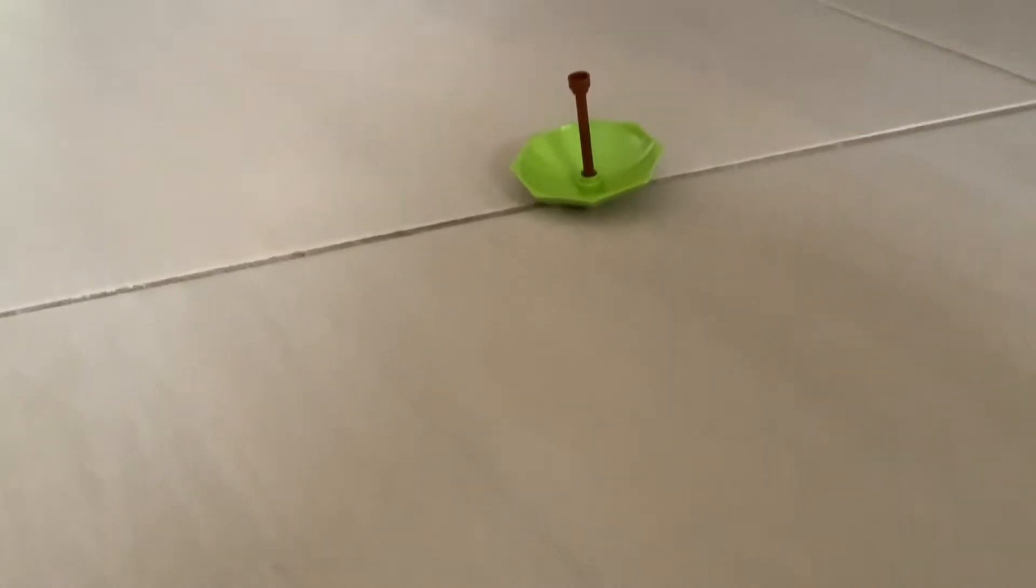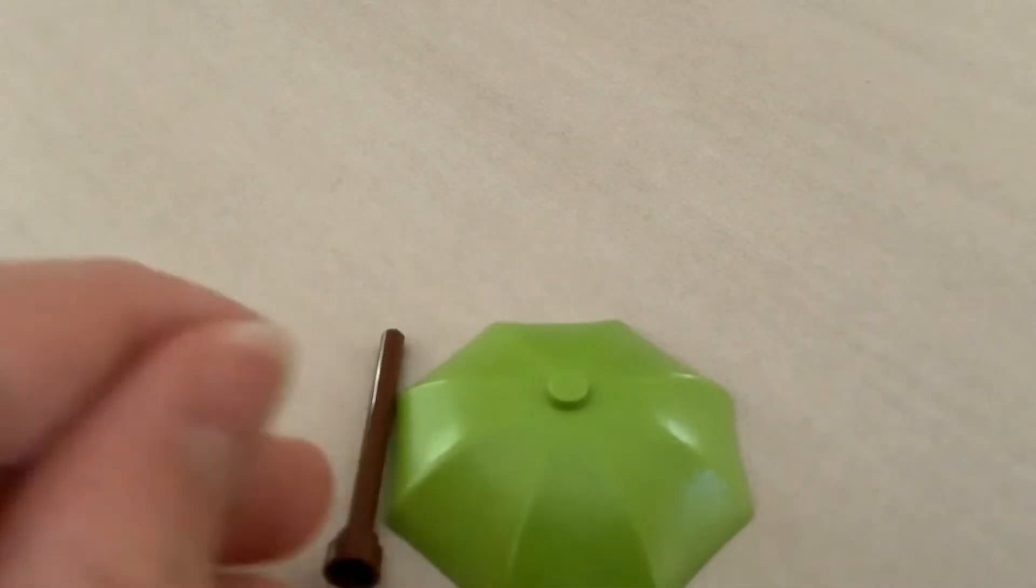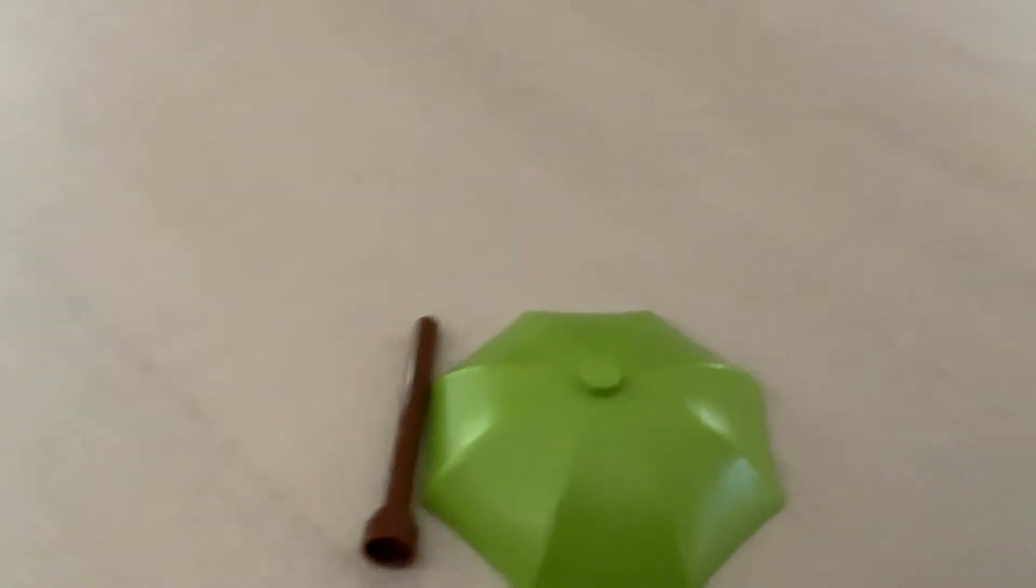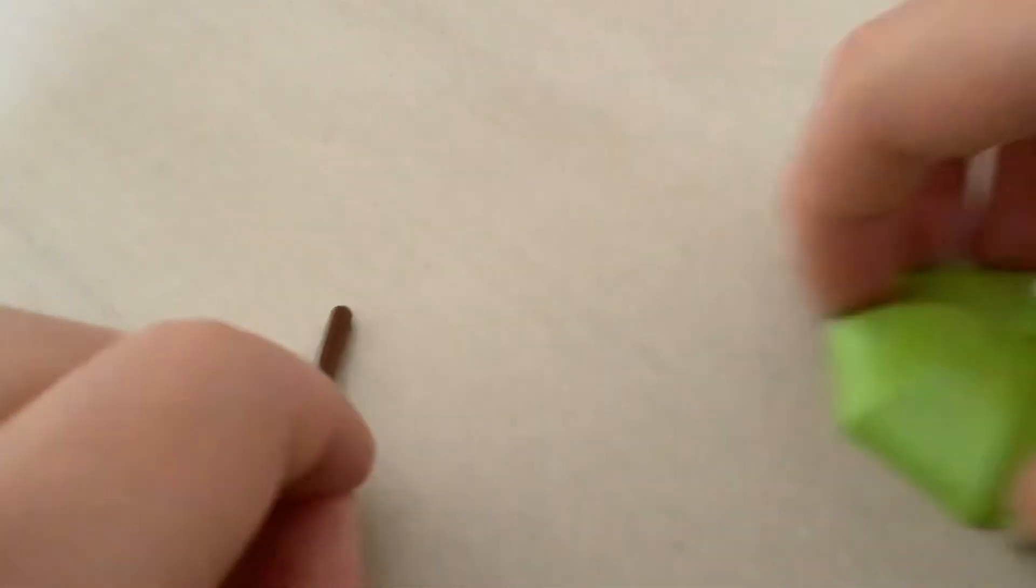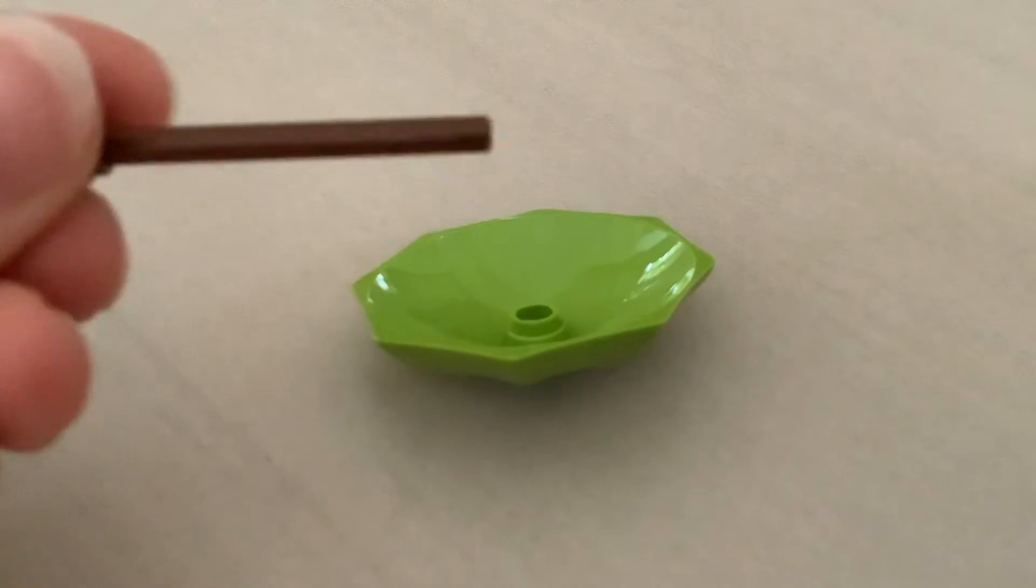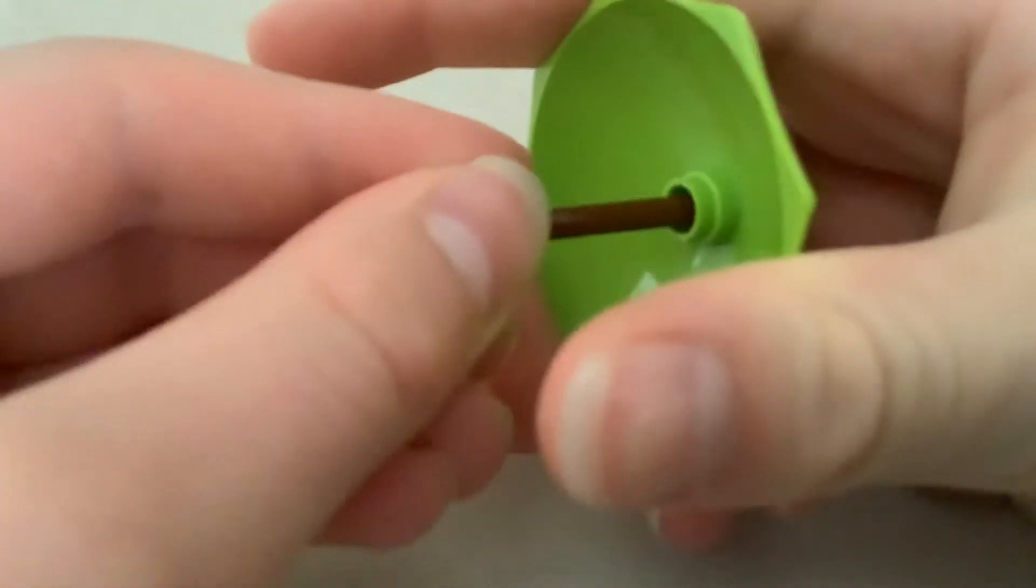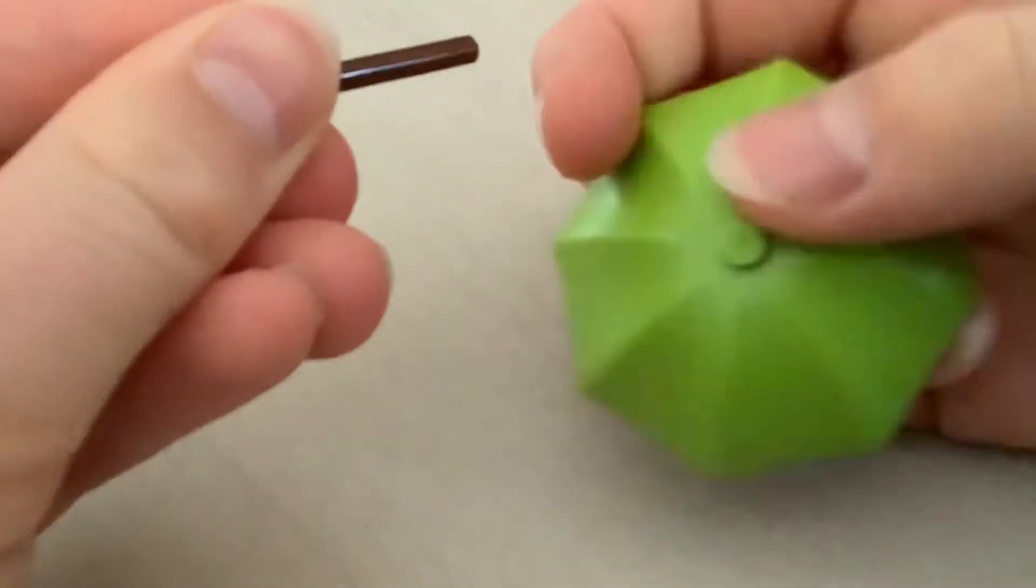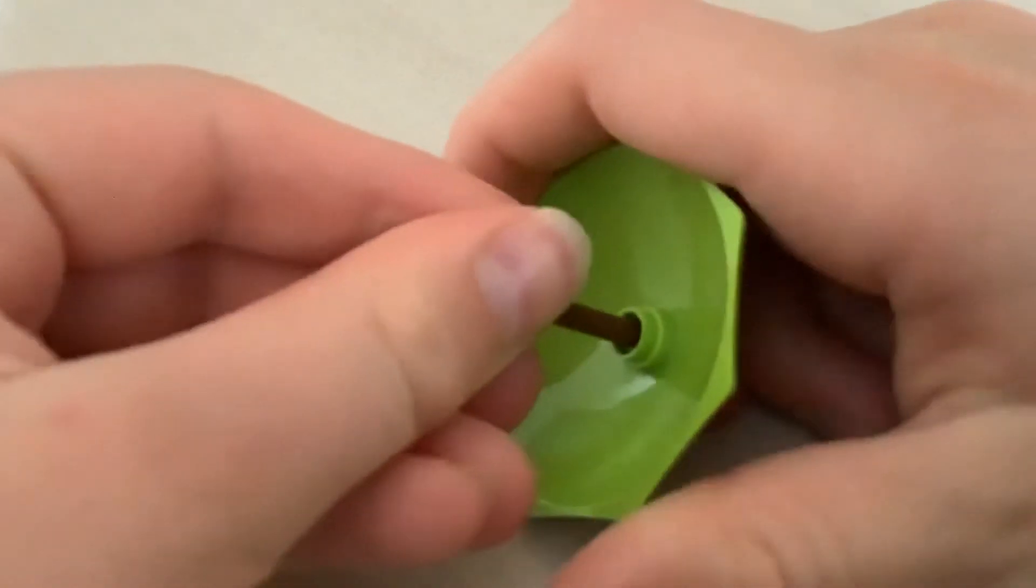Let's do a quick review on how you make it. So first you have an umbrella head and a stick. Then what you do is you get the umbrella head and the stick, and you put the stick into the umbrella head. Spinning top made.